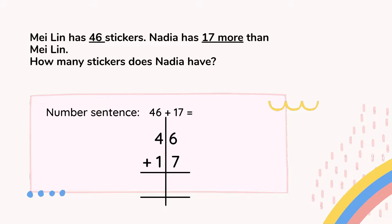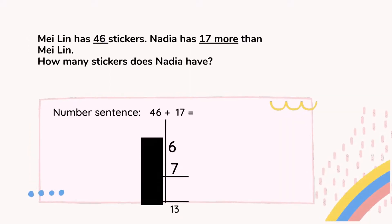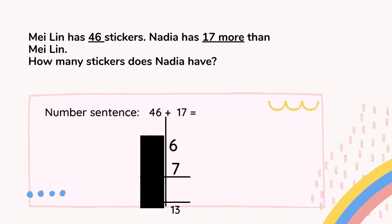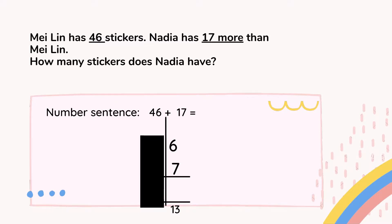As usual, transfer the number sentence into vertical form: 46 on top, 17 below, draw the lines, and don't forget the plus symbol. Next, we look at place value ones. We have number 6 and number 7. We're going to do count on: put number 6 at your mouth, number 7 at your fingers — 6, 7, 8, 9, 10, 11, 12, 13. You get the answer 13.